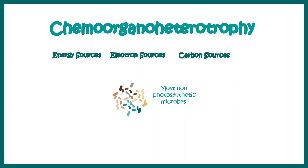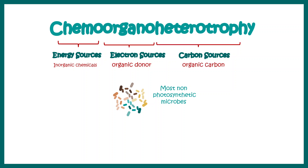Chemo-organo-heterotrophy is the last category. 'Chemo' means chemicals serve as the energy source. 'Organo' means electron sources are from organic donors, and 'heterotrophy' means carbon sources are derived from organic carbon, not CO2. Most non-photosynthetic microbes fall under this category.